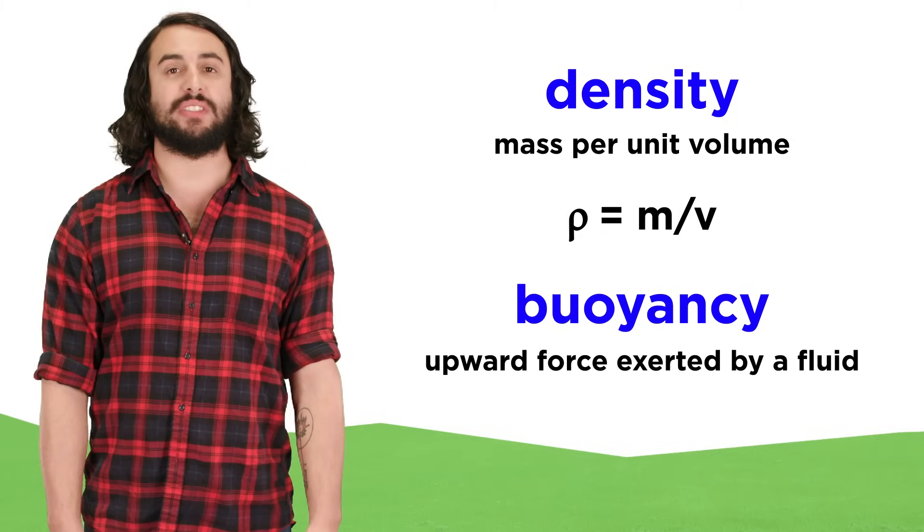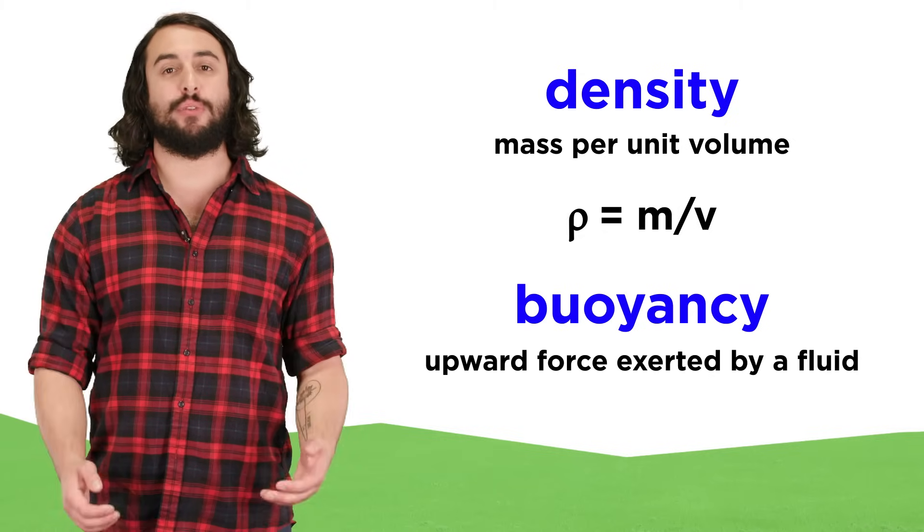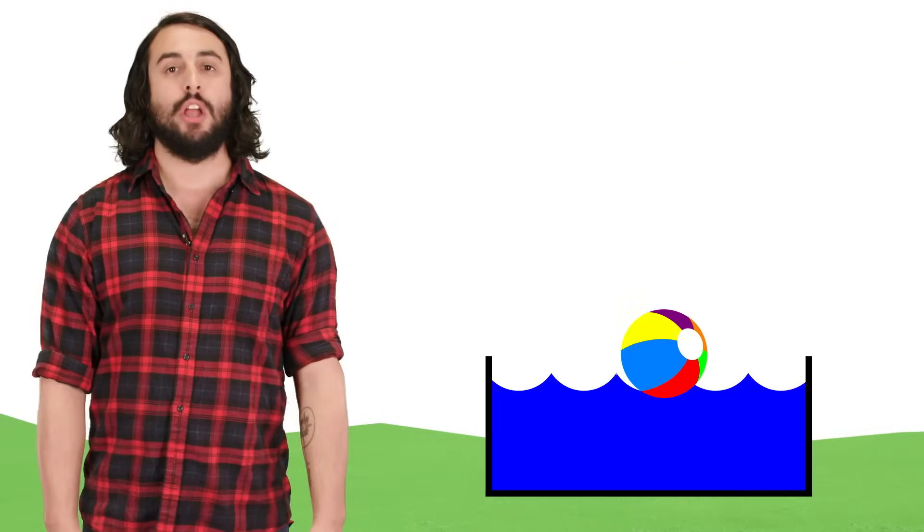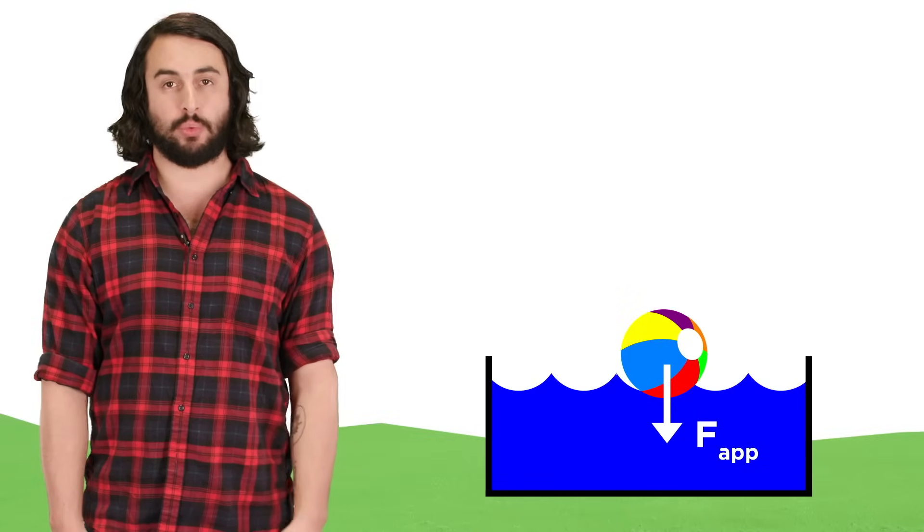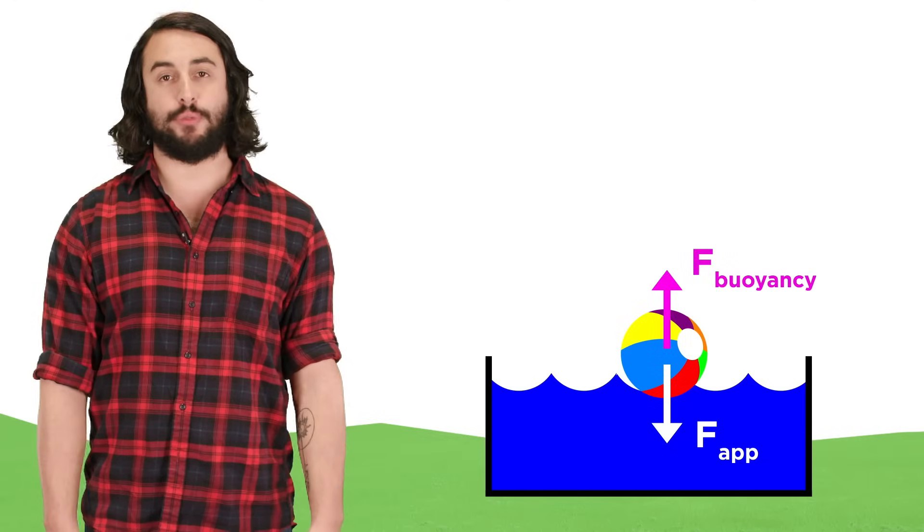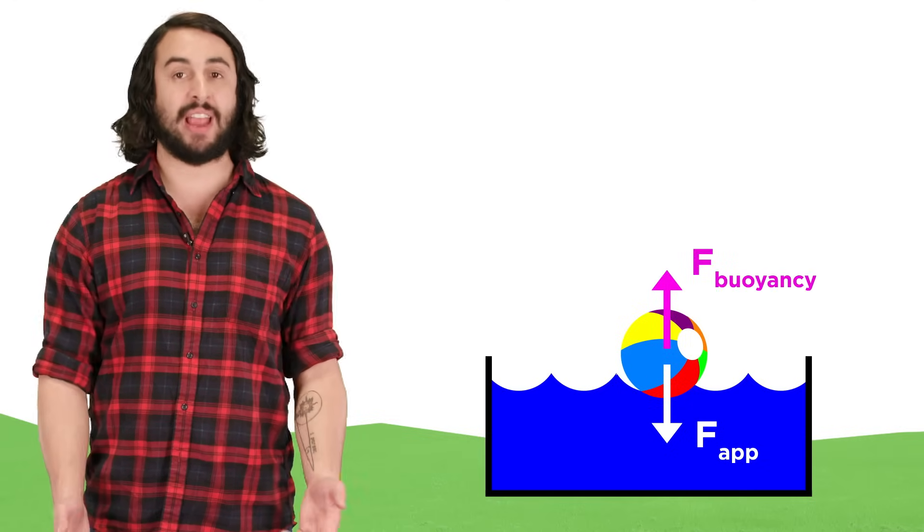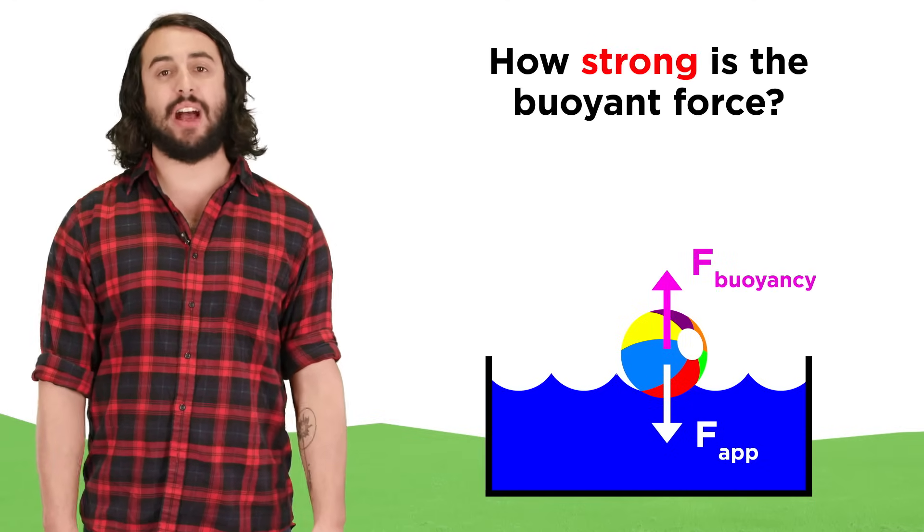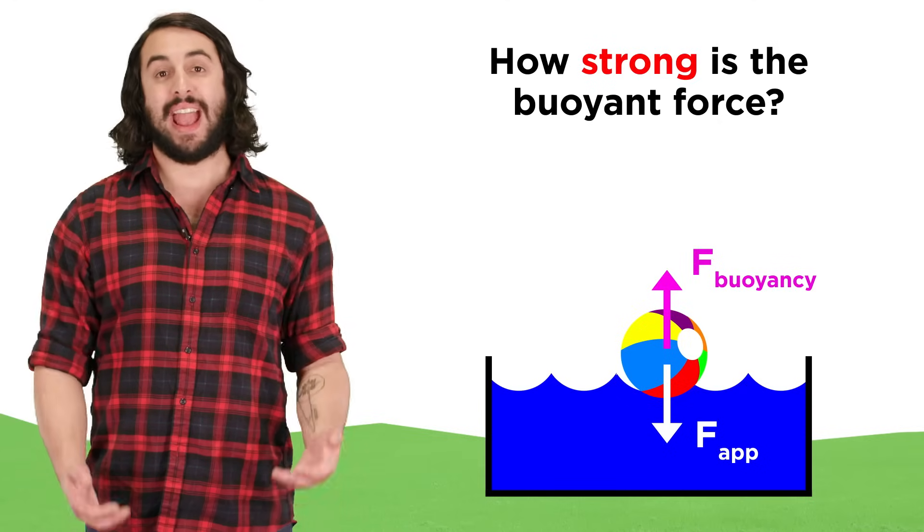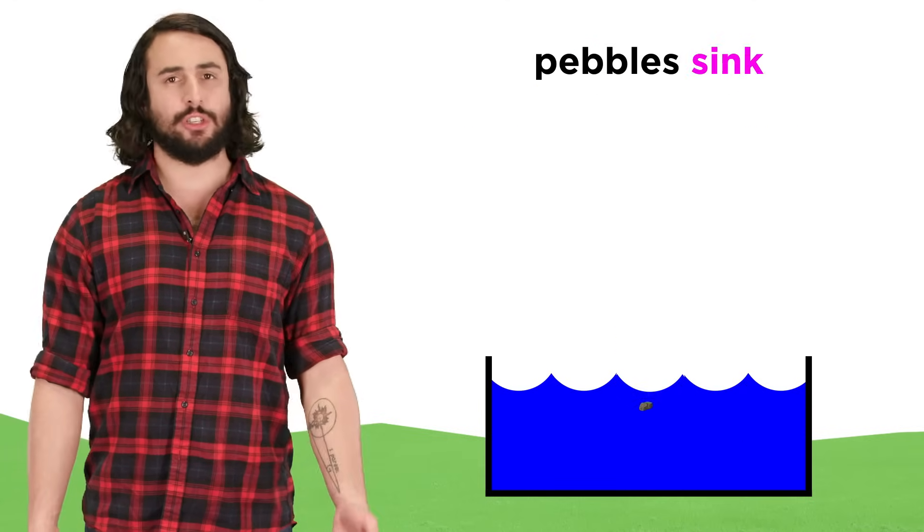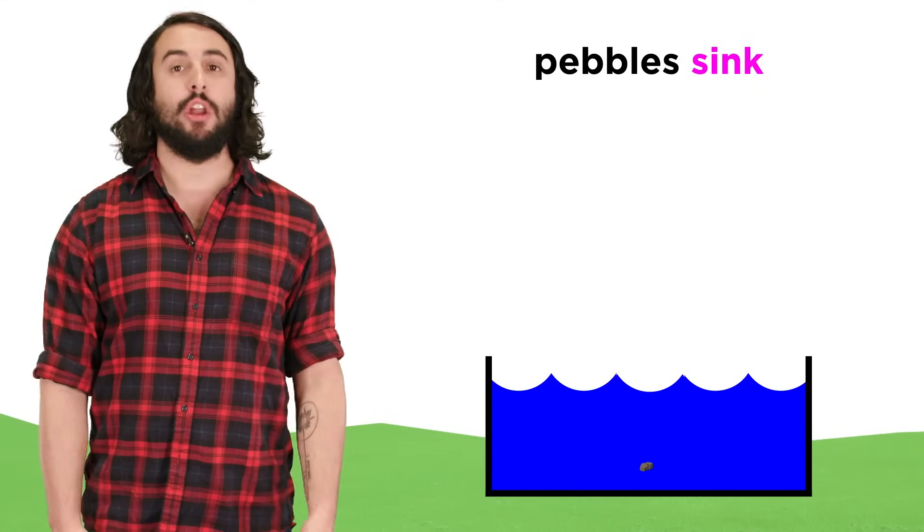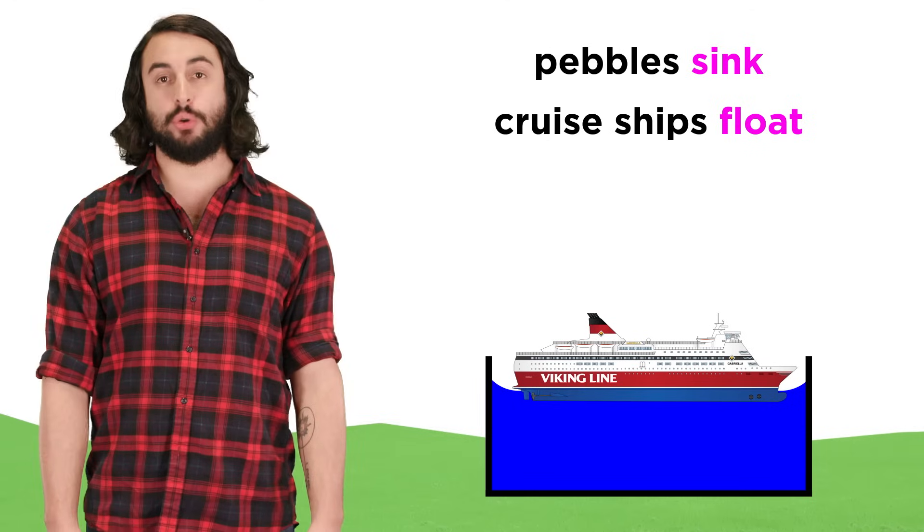This is the upward force that is exerted on an object by the fluid it is submerged in. You will be familiar with the buoyant force if you have ever tried to push a beach ball underwater. It is difficult to do because of the buoyant force that counteracts your applied force. But exactly how strong is the buoyant force and why do some objects sink while others float? It can't have to do with size because a tiny pebble will sink while a massive cruise ship will float.